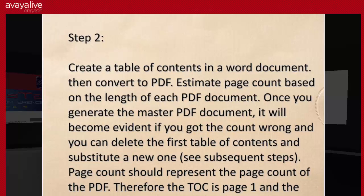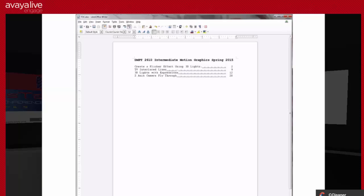Your table of contents itself is going to be page one — or if you wanted to include a cover, the cover would be page one and the table of contents would be page two. You just want to calculate a rough estimation of your page numbers. Here's an example of a table of contents I made in Microsoft Office — it has the title of the course and then the different materials with a page number.